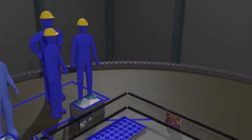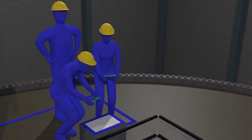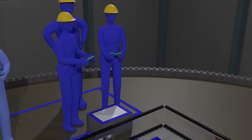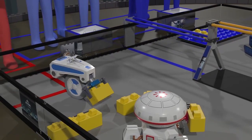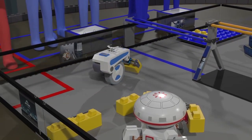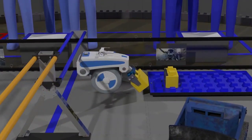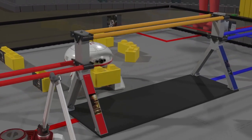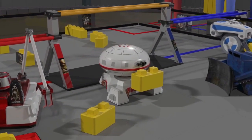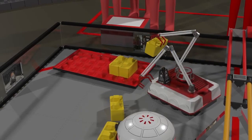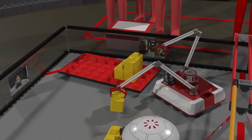Following the autonomous period is the 2-minute driver-controlled period. There are a number of ways to score points. Each stone delivered completely through an alliance's bridge earns 1 point. However, a stone delivered through the neutral bridge does not earn any points. Each stone placed on the foundation earns 1 point.